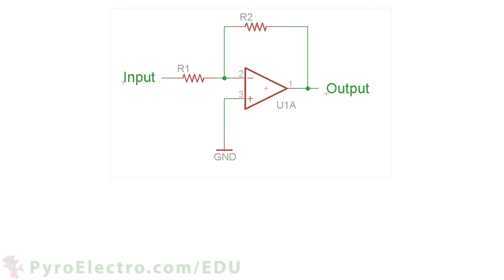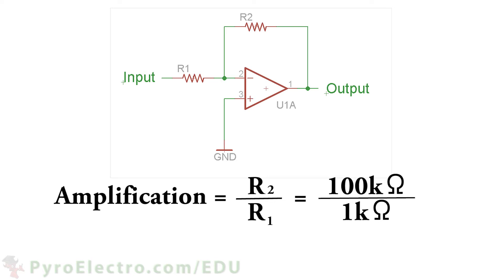For the inverting amplifier, we determine the amplification amount by this simple formula. R2 divided by R1 equals the amplification of the input signal. So if, for example, we use a 100 kilo-ohm resistor for R2 and a 1 kilo-ohm resistor for R1, the output will be 100 times the magnitude of the input signal.